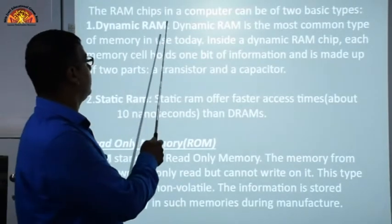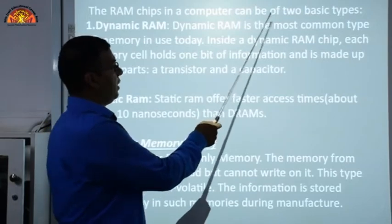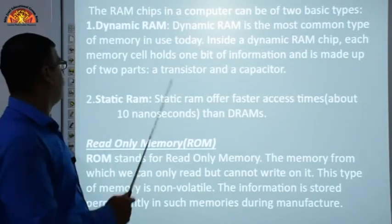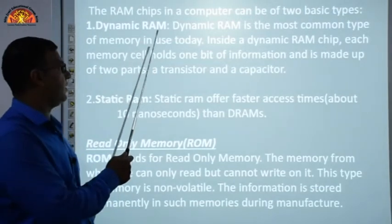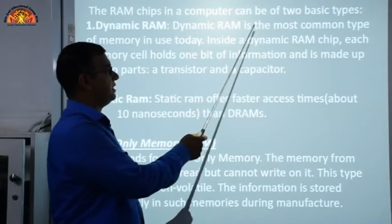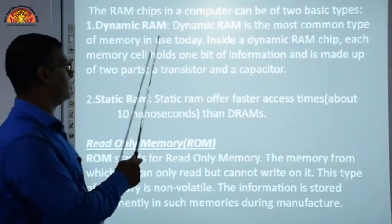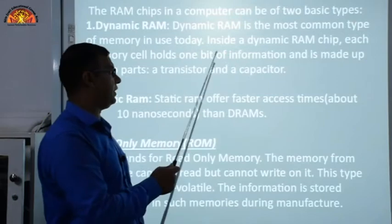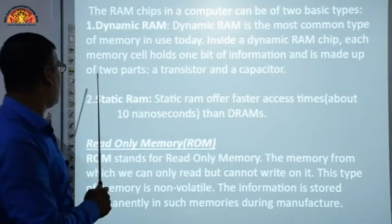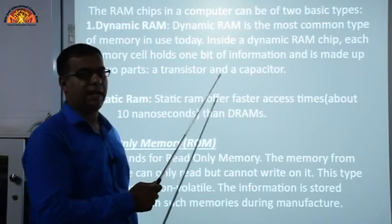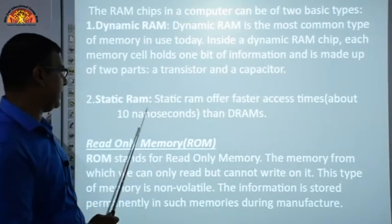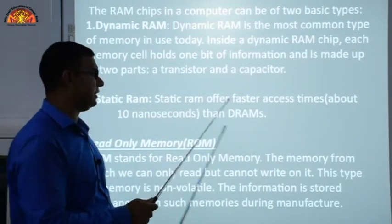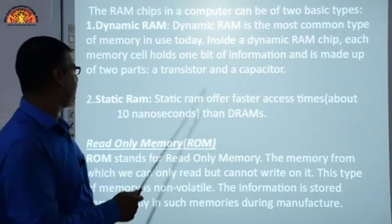RAM chips are of two basic types: Dynamic RAM (DRAM) and Static RAM (SRAM). Dynamic RAM is the most common type used today; each memory cell holds one bit and is made up of a transistor and a capacitor. Static RAM offers faster access times — about 10 nanoseconds — than DRAM. So static RAM is faster than dynamic RAM.